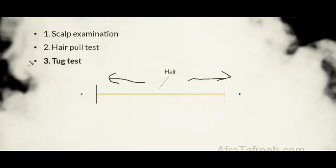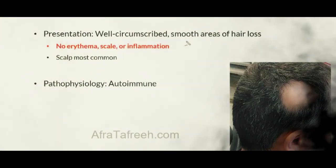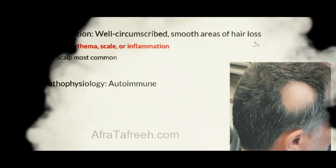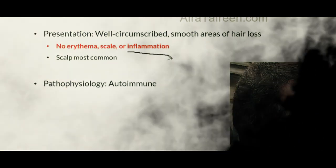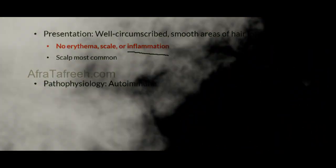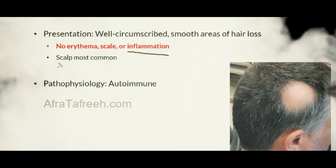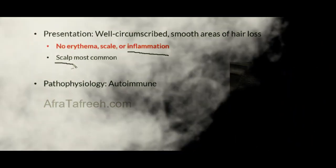In alopecia areata, the classic patient presents with well-circumscribed, smooth areas of hair loss. On scalp examination, these patients will have no erythema, scale, or signs of inflammation — this is very high yield, especially compared to inflammatory alopecias such as tinea capitis. The scalp is the most common location, but alopecia areata can also manifest in a patient's beard or on any other body surface where hair grows.